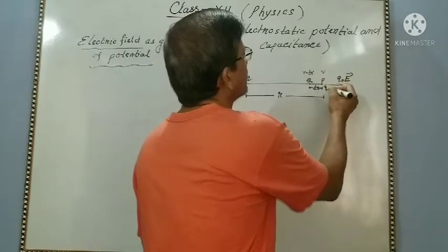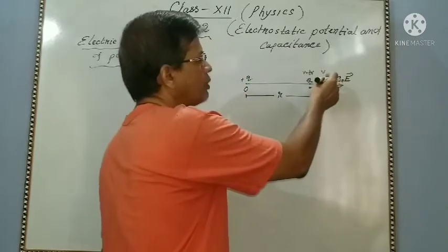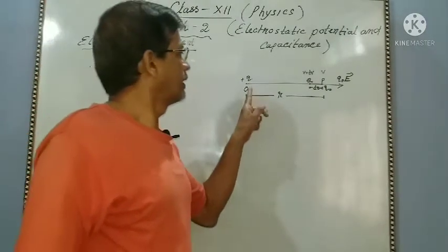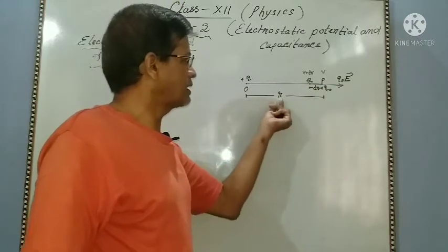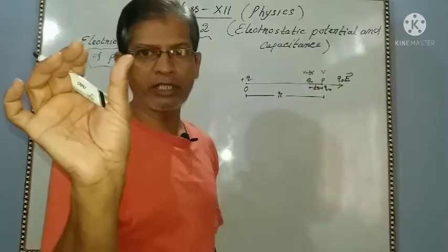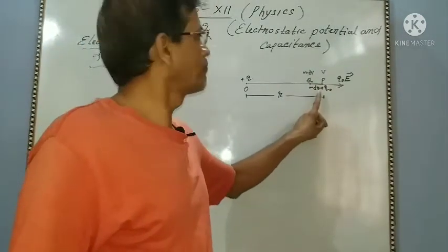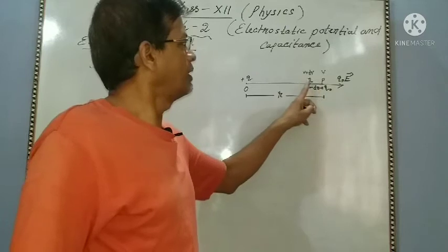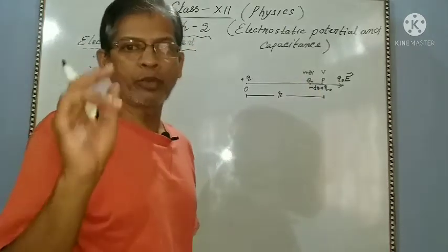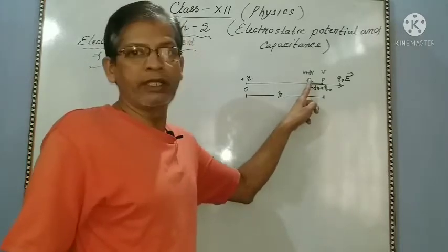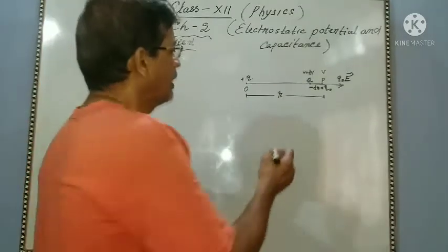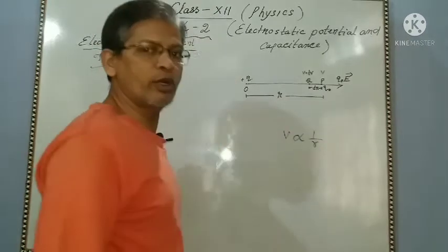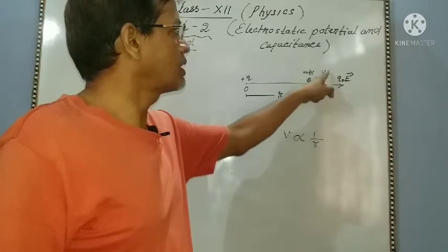The test charge Q naught is taken from point P to point Q. Point P is at a distance R, and PQ is a very small distance dr. V is the potential at point P, and V plus dV is the potential at point Q. Potential is inversely proportional to distance — greater distance means lower potential.